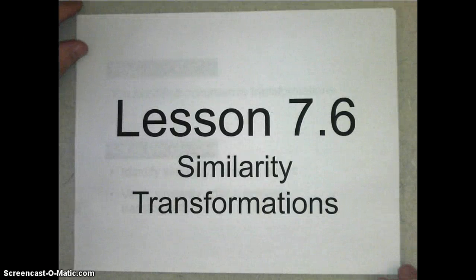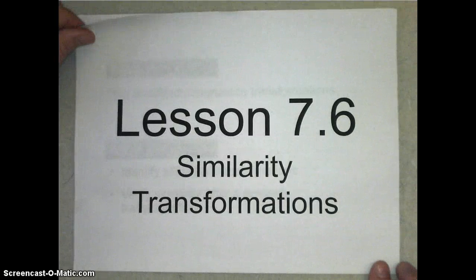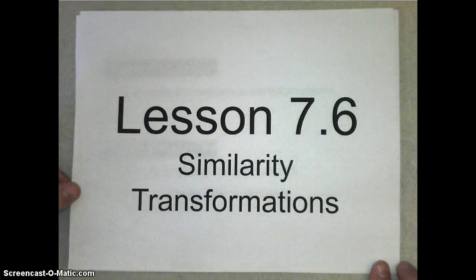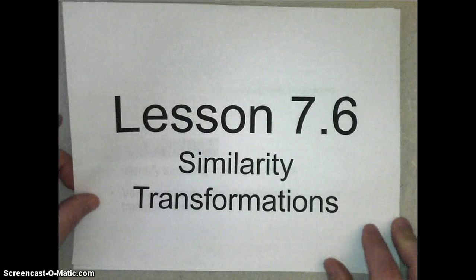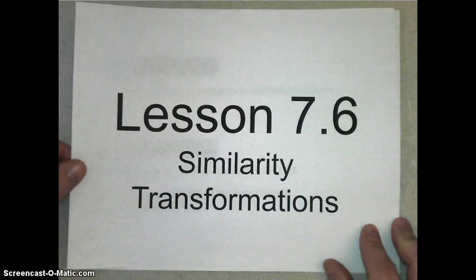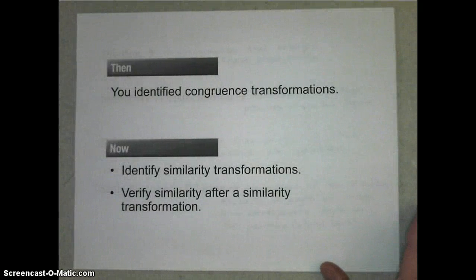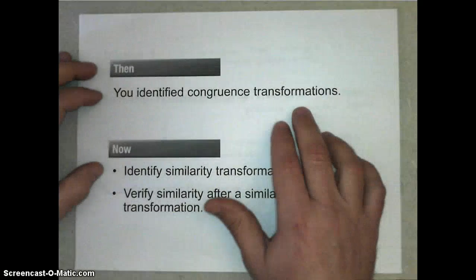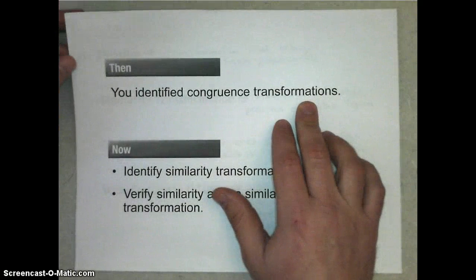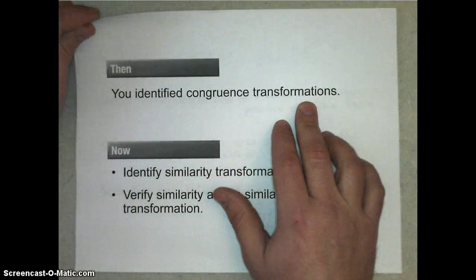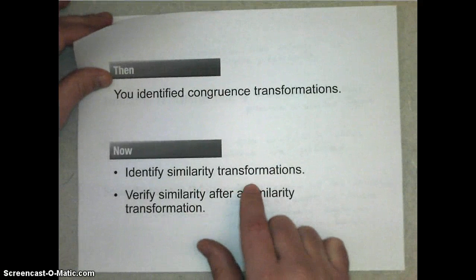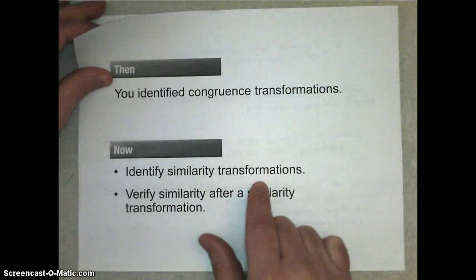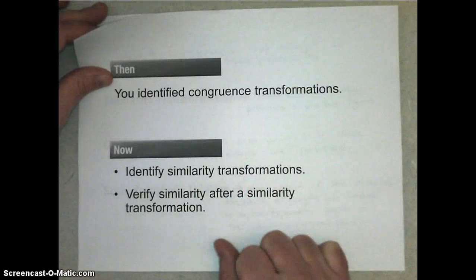Hello and welcome to the video notes for Lesson 7-6, Similarity Transformations. We're going to talk about similarity transformations — those are transformations that leave you with similar figures to the original figures. In the past we've identified congruence transformations, where transforming an object gives a resulting image congruent to the original. Now we're going to identify similarity transformations: transformations that give a resulting image similar to the original figure but not congruent.